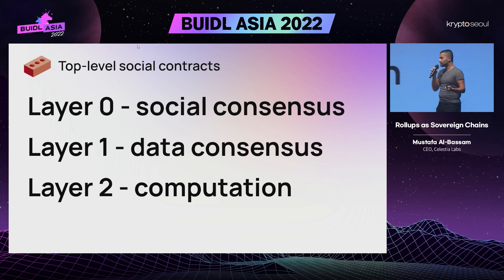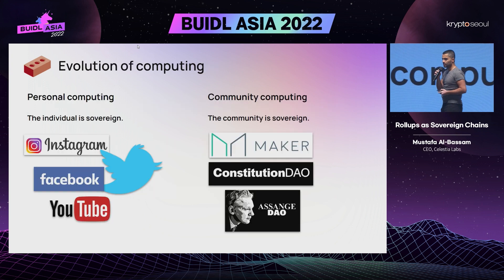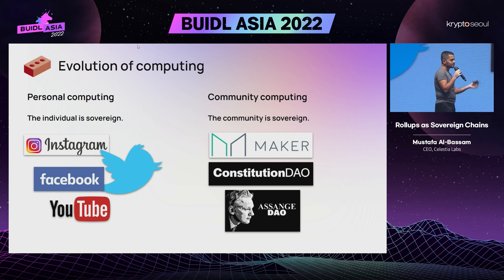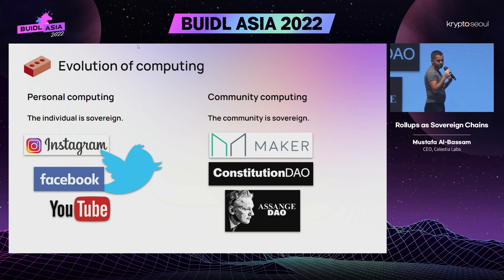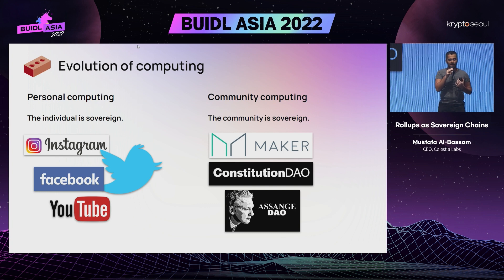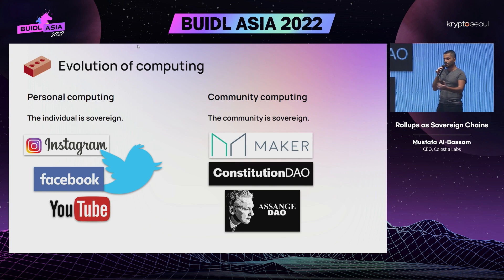Whereas if you have an enshrined rollup, in many cases you would have to ask the layer-one chain to hard fork, because you wouldn't be able to do it directly. In the 90s and 2000s, there was this idea of personal computing making the individual sovereign — individuals became a lot more sovereign because they could create their own platforms on the internet, communicate with people directly, and use social media. But blockchains enable communities to be sovereign through the proliferation of community computers in the form of blockchains, allowing people to create DAOs with their own social consensus.